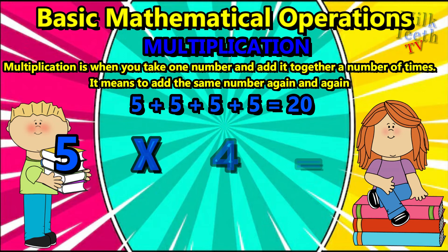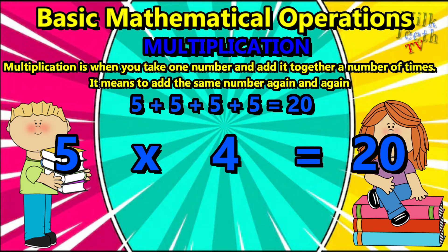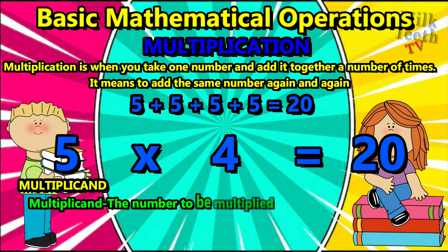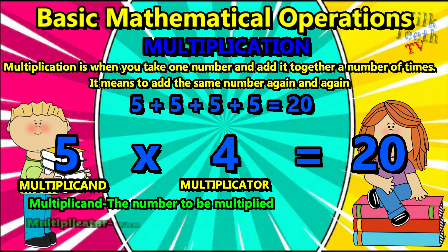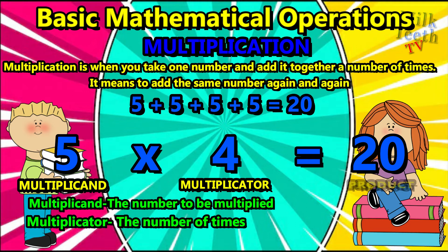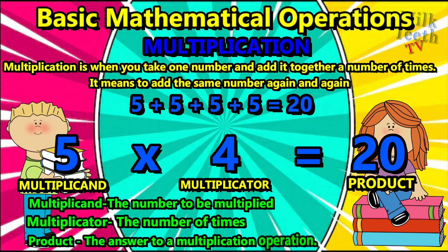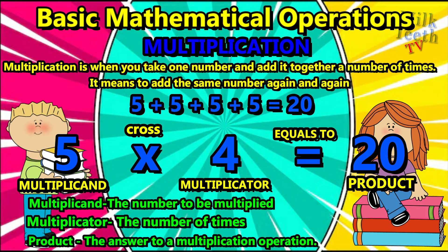This repeated addition of five, four times, can be written as five times four equals twenty. Here, five is the multiplicand — the number to be multiplied — four is the multiplicator, that is the number of times a number is multiplied, and twenty is the product, or the answer to a multiplication operation. We use the cross symbol for multiplication and the equals symbol to depict the product.